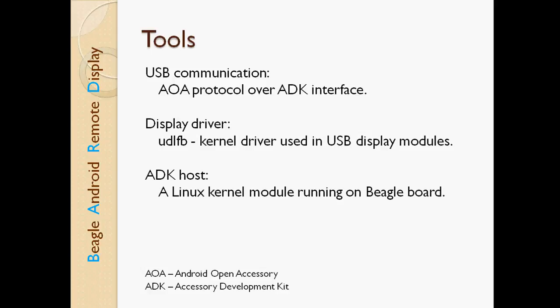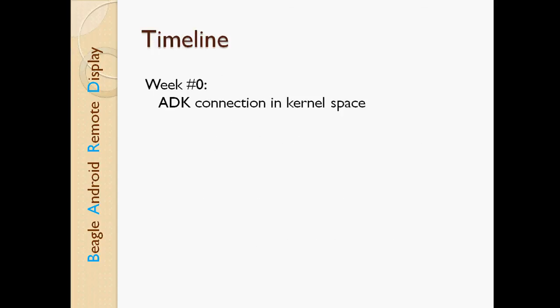This module will be built during this project. For the Android application, we are going to use Java, Android Development Tools, and Eclipse. Before the official coding period starts, we are going to write the kernel space code for putting the Android device in ADK mode. ADK mode is slightly different from USB mode. We already have a couple of user space codes, and we will be converting them into kernel modules so that they will suit our future needs.